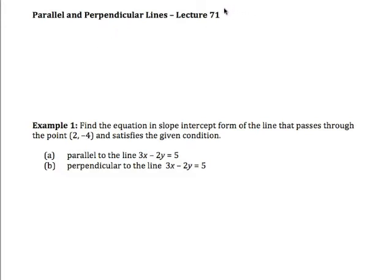Just as a point of review, let's remember that a horizontal line has the form y equals k and it has a slope equal to zero.